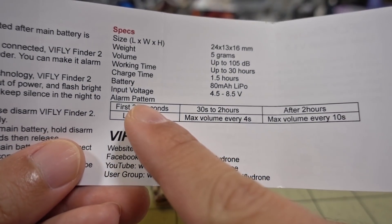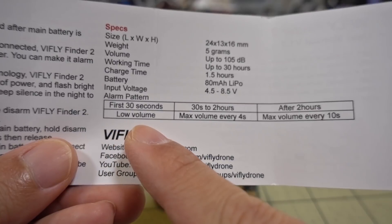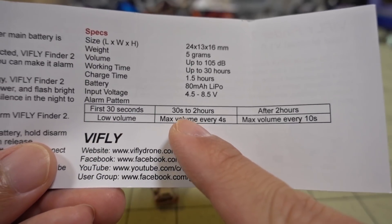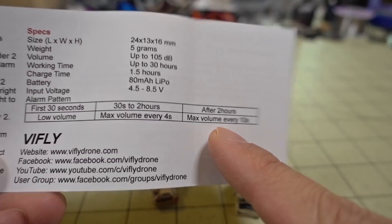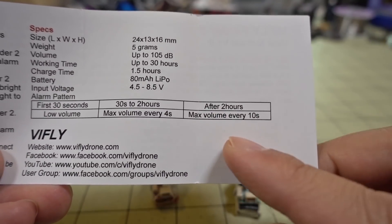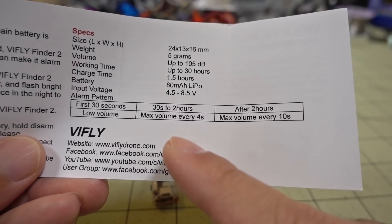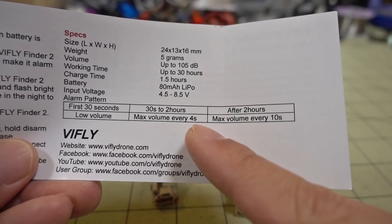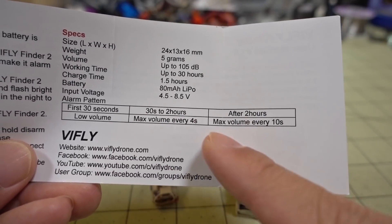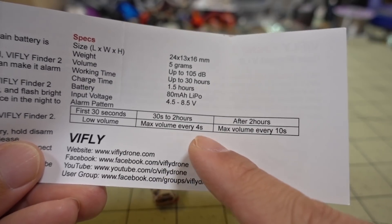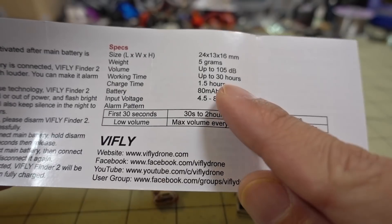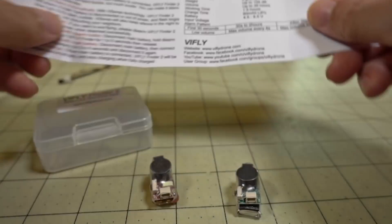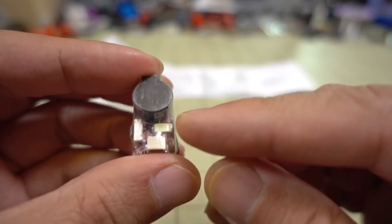It's basically the alarm pattern. First 30 seconds you have low volume, then 30 seconds to 2 hours you have max volume every 4 seconds. After 2 hours you have max volume only every 10 seconds. So basically it's saving power by not beeping at a higher frequency as time goes on. That's the big difference in terms of getting a longer working time.